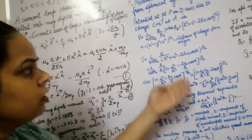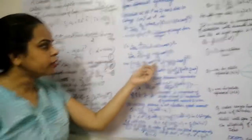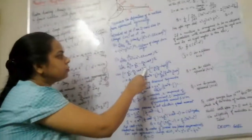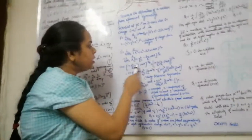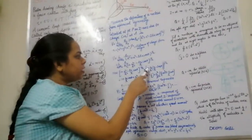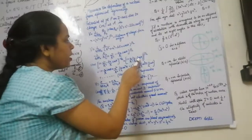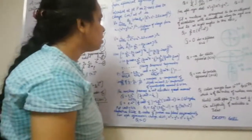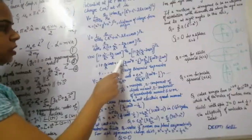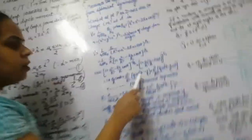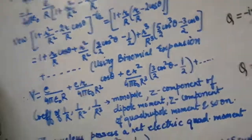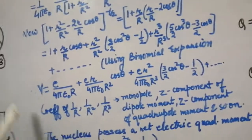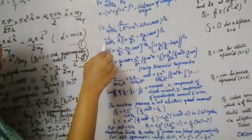Taking the bracketed term to the numerator gives a negative-half power: [1 + (r²/R² − 2r/R·cosθ)]^(−½). Taking out r/R common and expanding binomially, we get terms: 1 + (r/R)·cosθ + (r/R)²·(3cos²θ − 1)/2 + (r/R)³·(5cosθ/2 − 3cosθ/2) + higher-order terms.